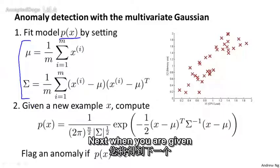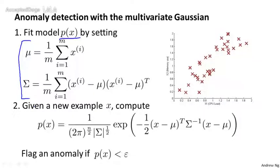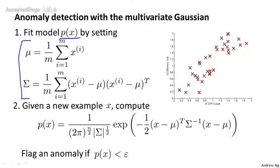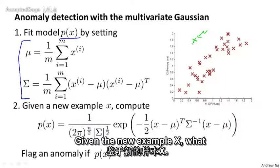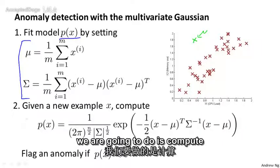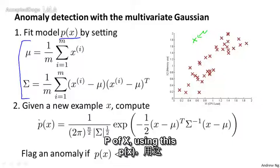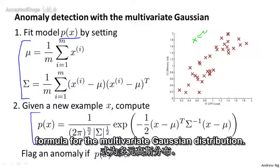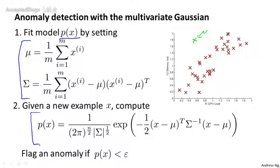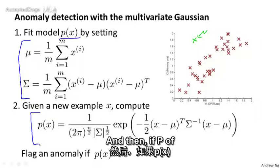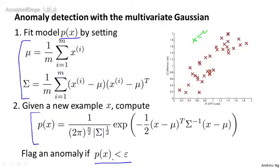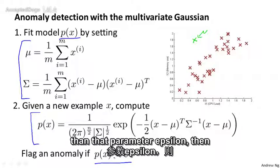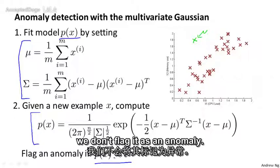Next, when you're given a new test example x, what we're going to do is compute P of x using the formula for the multivariate Gaussian distribution. Then, if P of x is very small, we flag it as an anomaly, whereas if P of x is greater than the parameter epsilon, we don't flag it as an anomaly.